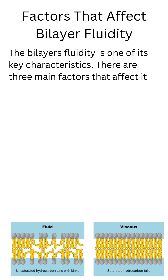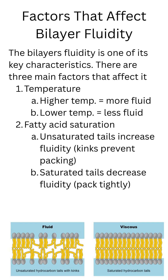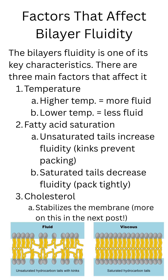Membrane fluidity is super important for cell movement. It allows the membrane to adapt to mechanical pressure and maintain function despite temperature shifts. There are three main factors that influence membrane fluidity: first, temperature — higher temperature increases fluidity while lower temperature decreases it; second, fatty acid saturation — the more unsaturated tails we have, the more fluid the membrane; and third, cholesterol, which is a very important component we'll cover more in the next post, so make sure to stay tuned.